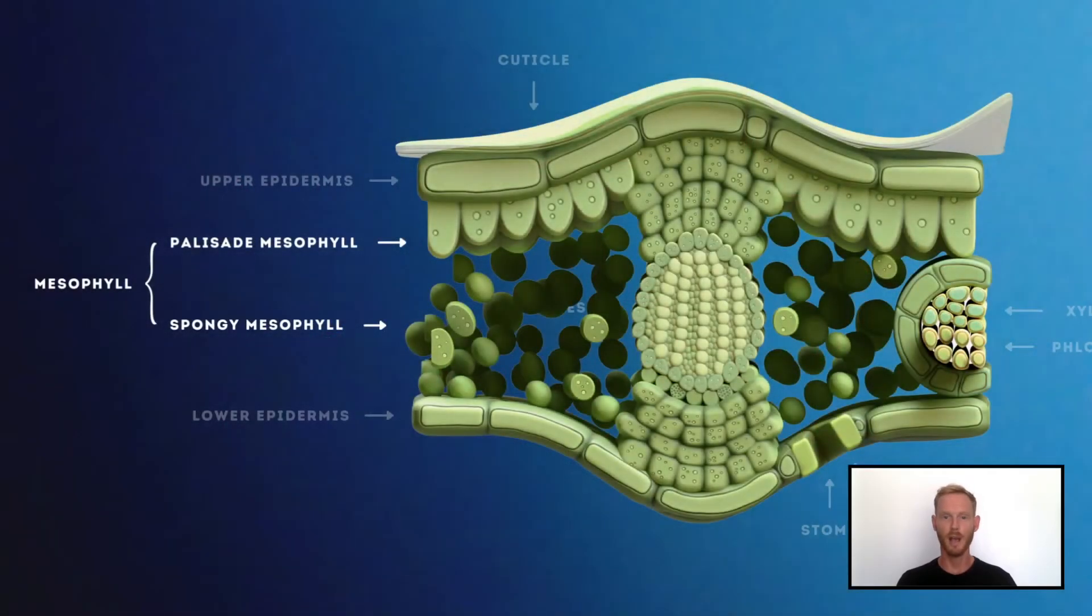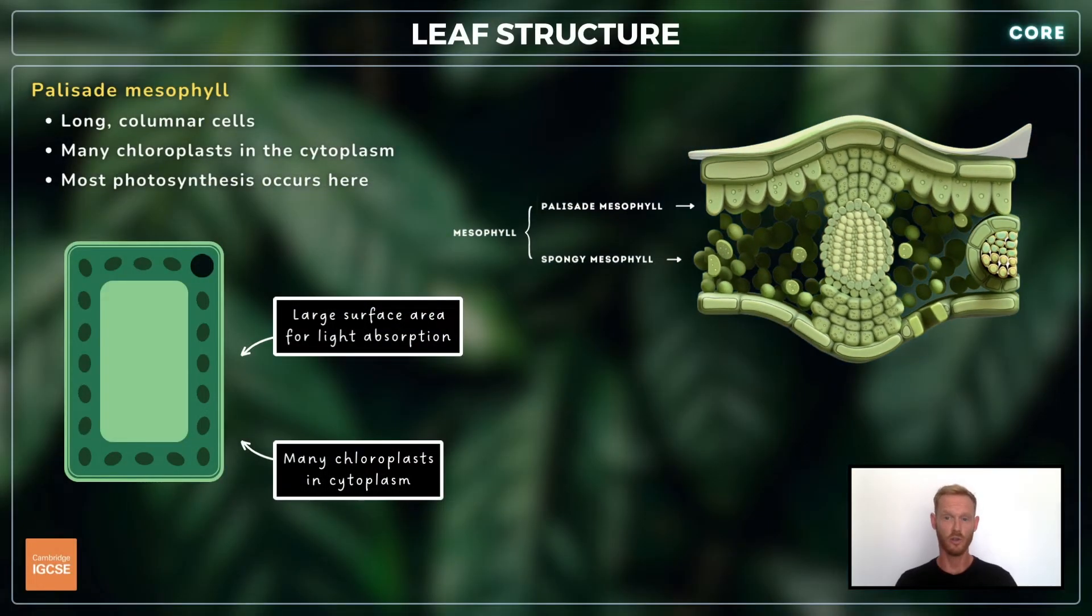The tissue between the upper and lower epidermis is called mesophyll. The upper palisade cells are long structures with a large surface area and many chloroplasts in the cytoplasm. They receive lots of light, which they convert to chemical energy in the form of glucose.